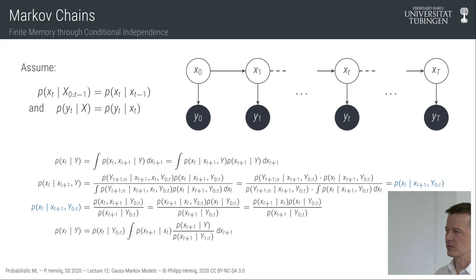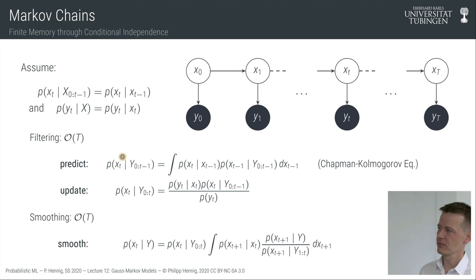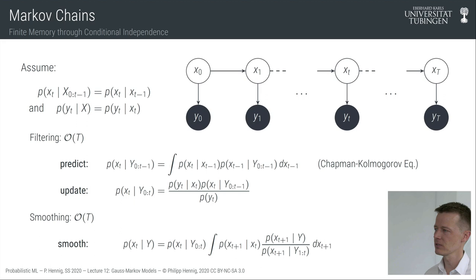These three steps — each of at most linear complexity in the number of time steps — have names in the signal processing community. The first step moving forward is called the prediction step; the second is the update step, basically Bayes' theorem. The prediction step in this abstract form is also called the Chapman-Kolmogorov equation. The backward step correcting predictions is called the smoothing step. In signal processing, these are known as prediction, filtering, and smoothing.